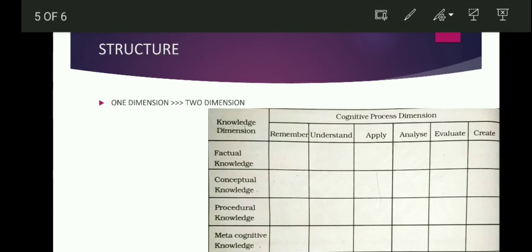Bloom's original taxonomy had one dimension — it's cognitive. The important cognitive processes are: Remembering, Understanding, Applying, Analysis. There are two dimensions: the Knowledge Dimension and the Cognitive Process Dimension.